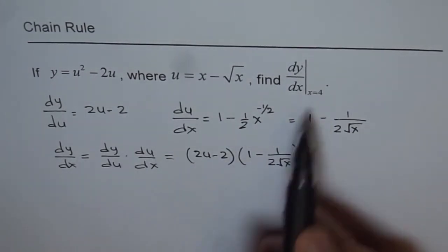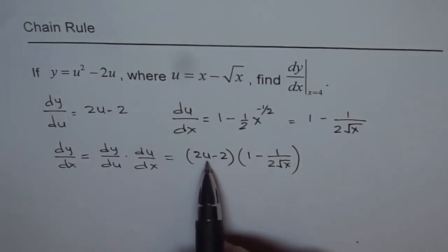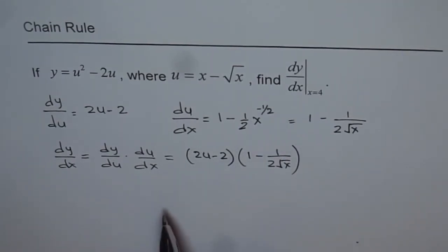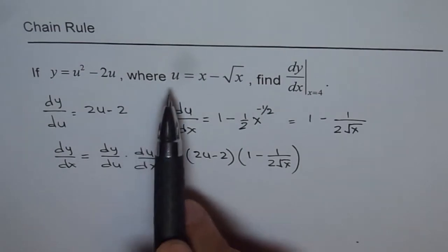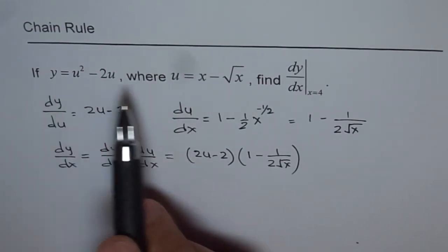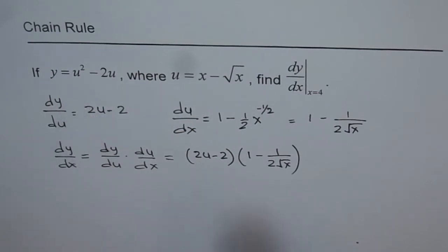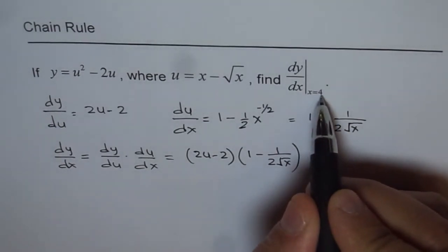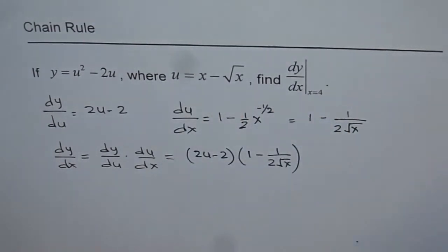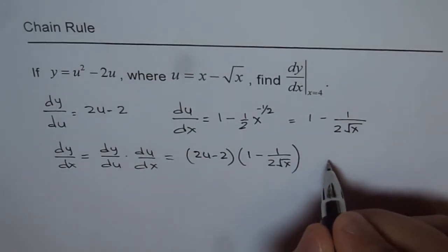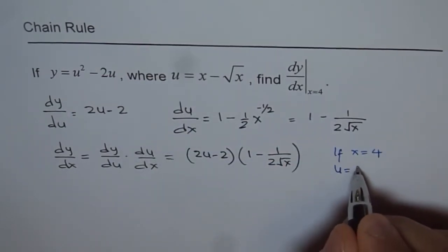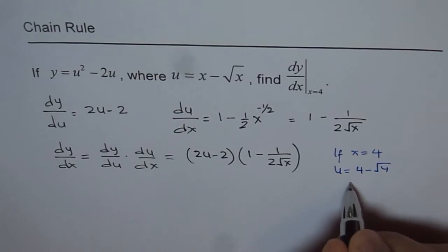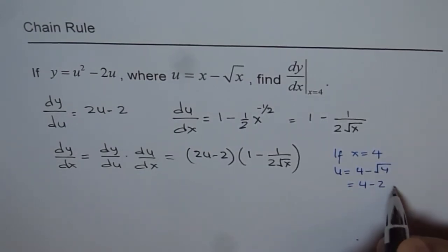To find it at x equals 4, we don't need to expand the whole expression in terms of x. What we can do is substitute 4 into the expression for u and find u first. So if x equals 4, then u equals 4 minus the square root of 4, which is 4 minus 2, and that equals 2.